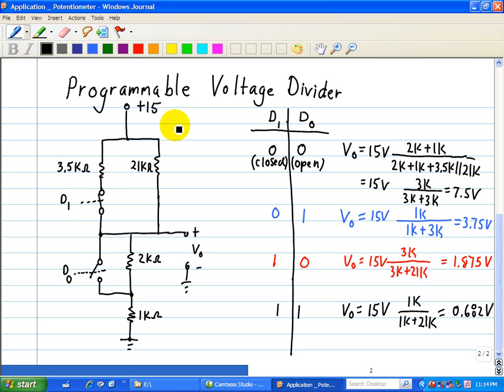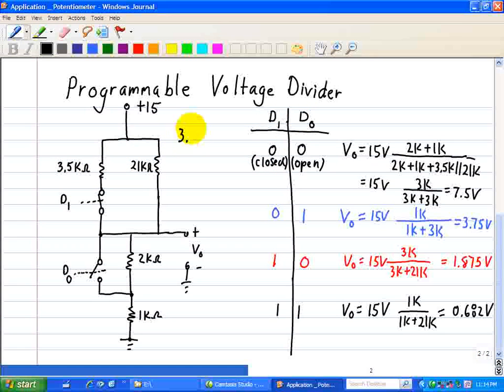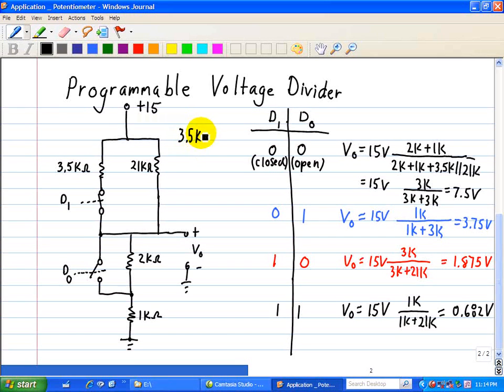and this 3.5 kiloohm in parallel with 21 kiloohm is equal to 3 kiloohm. So that parallel combination results in 3 kiloohms.